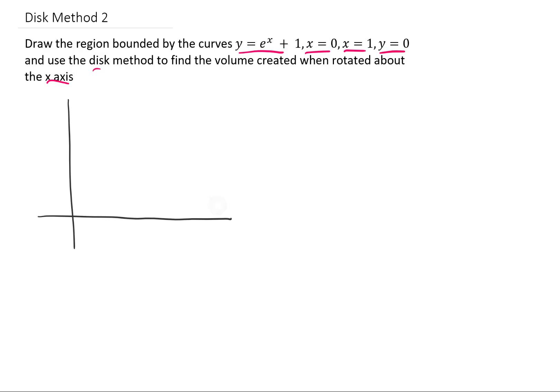Let's draw this thing first. e to the x is an exponential function. A typical e to the x function passes through the point (0,1), but since we're graphing e to the x plus 1, we're actually gonna pass this graph through the point (0,2). x equals 0 is just the vertical line at x equals 0. x equals 1, again, just a vertical line, and y equals 0 is a horizontal line on the x-axis.